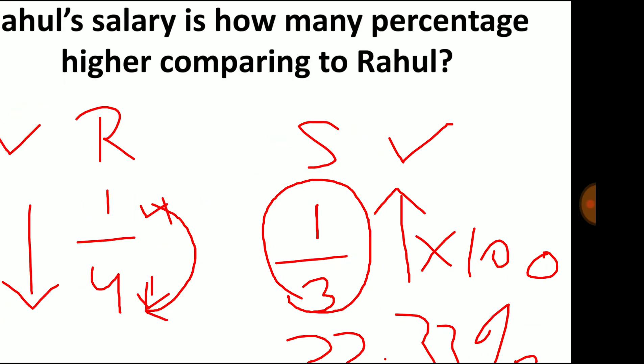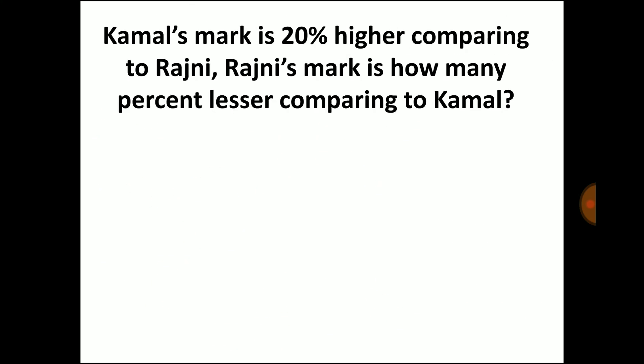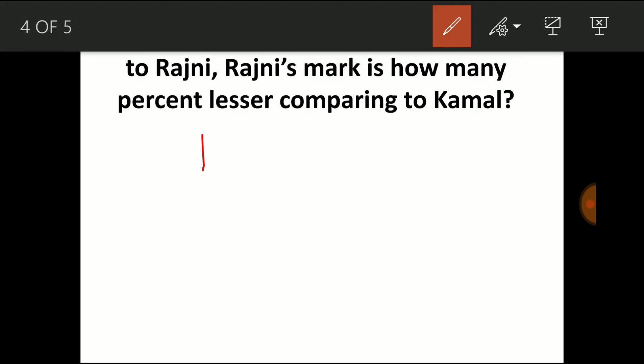Now moving to the next example. Kamal's mark is 25 percentage higher comparing to Rajini. Rajini's mark is how many percentage lesser comparing to Kamal? It is a similar type of question, but here it is given the increased fraction. So Kamal's mark is 20 percentage higher, and 20 percentage means the equivalent fraction is 1 by 5. So this is the increased fraction.